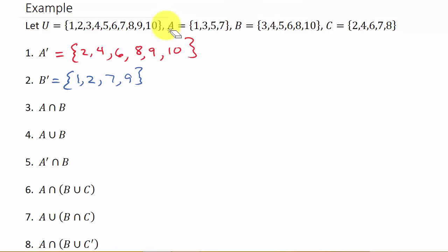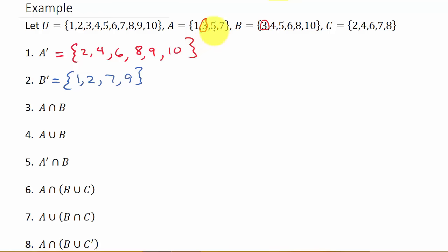Now let's look at A intersect B. We look at sets A and B and we want to know what these sets have in common. Well, B doesn't have a one. But B does have a three — so three is one element they have in common. B also has a five. And then seven — B doesn't have a seven. So the only elements they have in common are three and five, giving us A intersect B = {3, 5}.